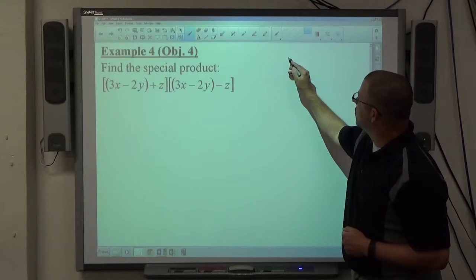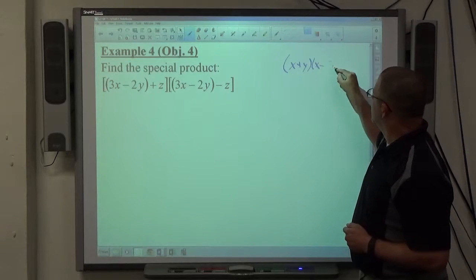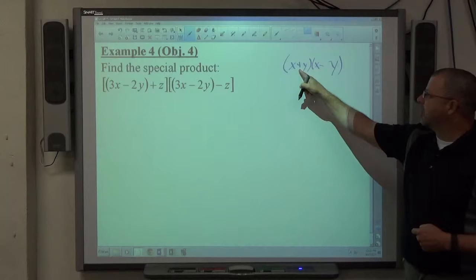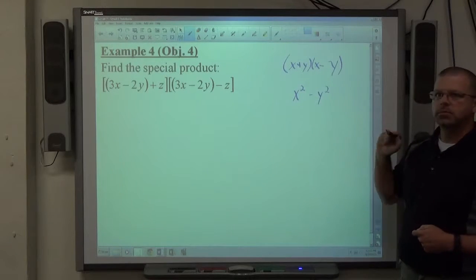The special product we're looking at is called a difference of squares: x plus y times x minus y. That's the difference of squares. And the product of a sum and difference of squares is first squared minus second squared. That's it.